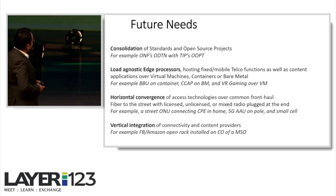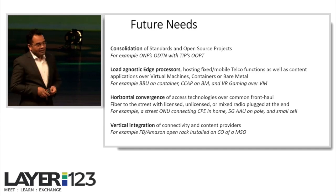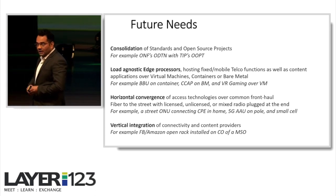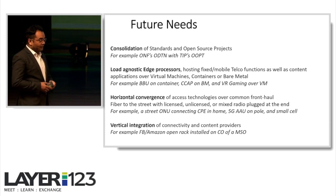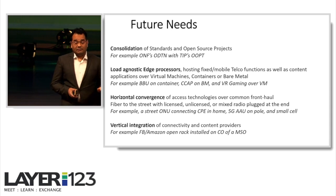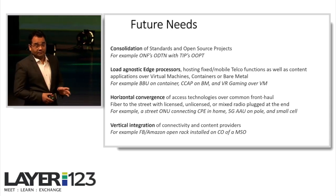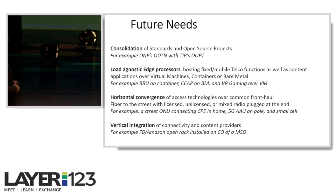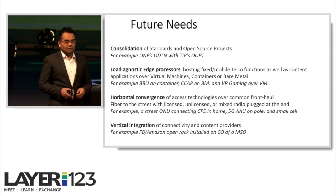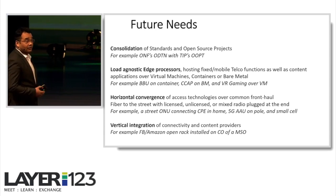Then the horizontal convergence. So various access technologies. It doesn't matter whether it is licensed or unlicensed. What you need, actually, is the fiber to the last street or the last point. And from there, you can plug anything. So you can plug a 5G AAU, again, on 60 gigahertz. Or you can plug a WiGig, for example, for the fixed network. So, again, one single ONU can connect in the home. A 5G AAU on the pole. A CPE in the home. Or a narrowband IoT small cell.